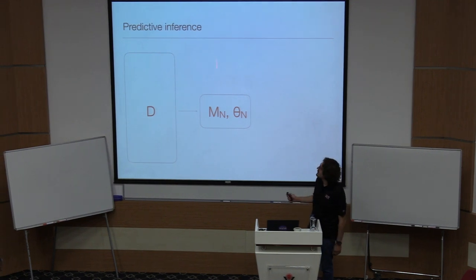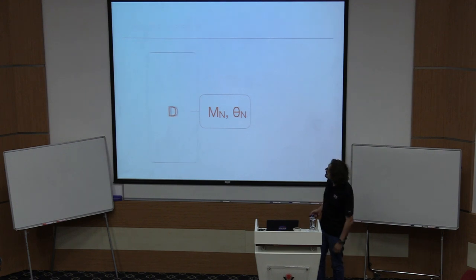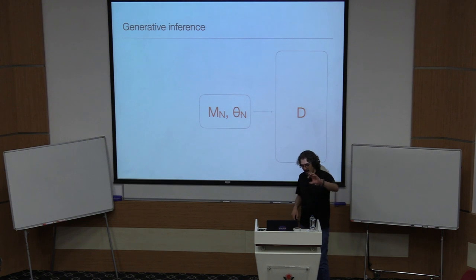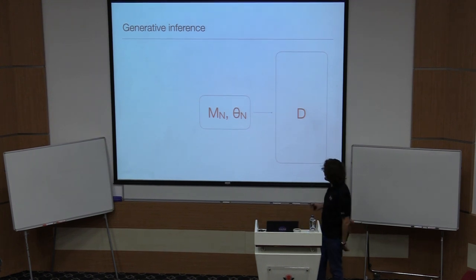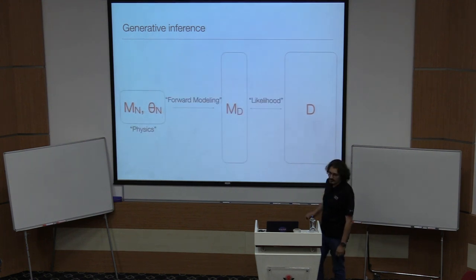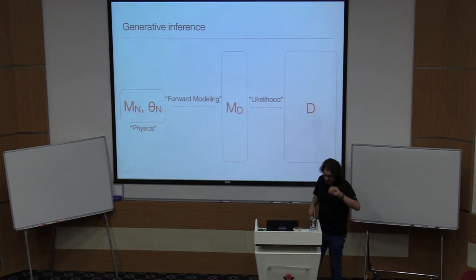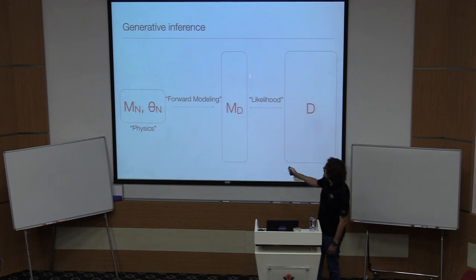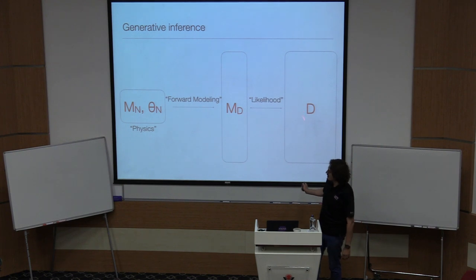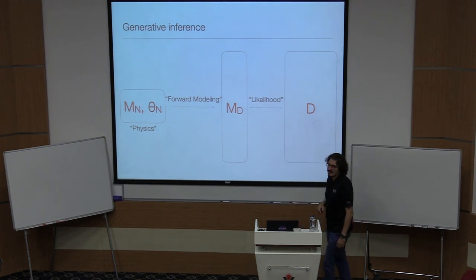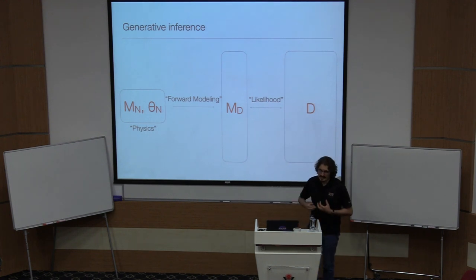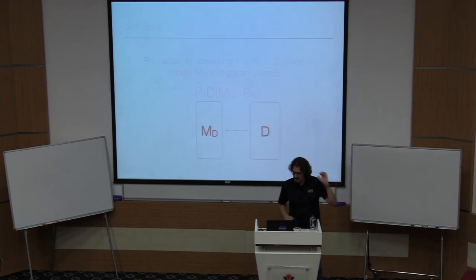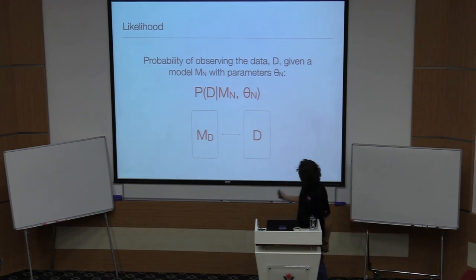There are two ways to do inference. First, predictive inference: you go from the data directly to the model space. Second, generative inference: you take the model, sample randomly, and project into the data space. Forward modeling is the projection of the latent space of the model — M theta — using some physical prescription such as the Einstein field equations or the Boltzmann equation, to get the model vector M sub D, which has the same dimensionality as the data. The comparison between model output and data is contained in a statistical object called the likelihood: the probability of observing data D under some model M.